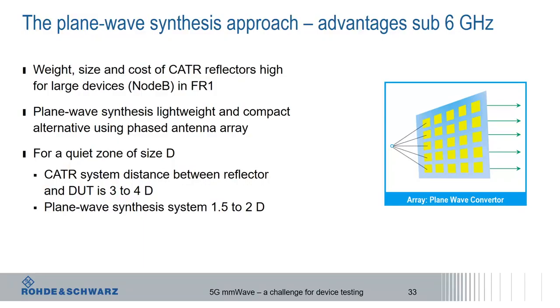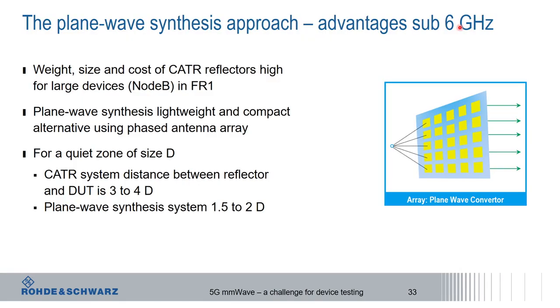Another approach to achieving far field conditions at near field distances is plane wave synthesis — mainly intended for FR1 sub-6 GHz testing, especially for larger devices like base stations. CATRs become very large, expensive, and hard to handle at low frequencies with big devices. A plane wave converter uses a multitude of antennas connected via phase shifters and amplifiers to synthesize a plane wave. It is much more compact and lightweight than a CATR reflector.